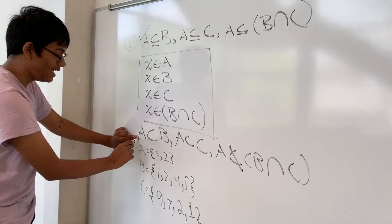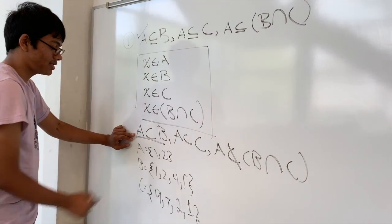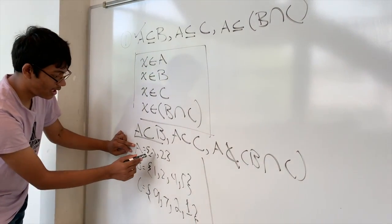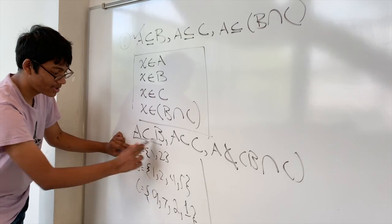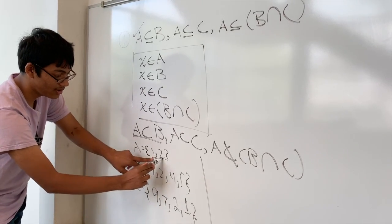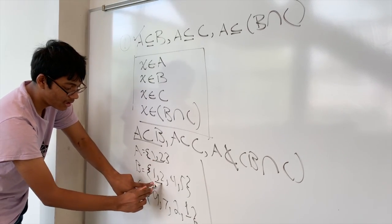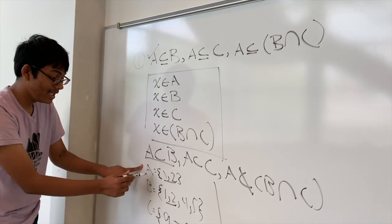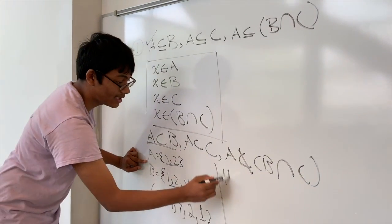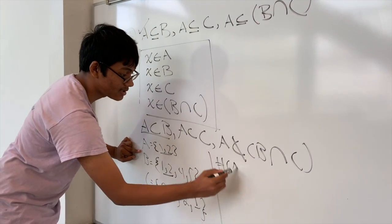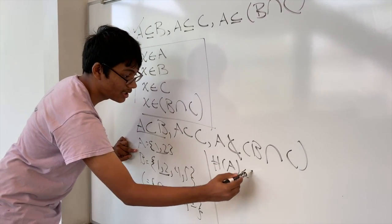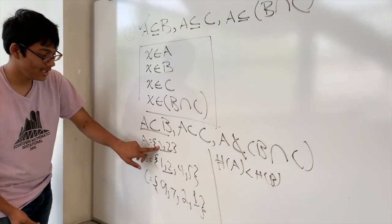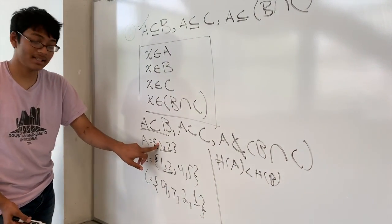So is A a proper subset of B? Well, let's take a look. Is A a subset of B? Yes, because all the elements in A are elements of B. Is the cardinality of A smaller than the cardinality of B? Also yes.